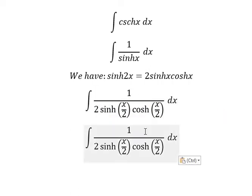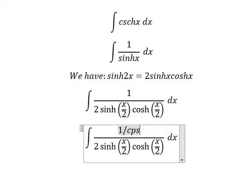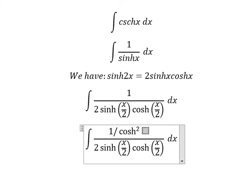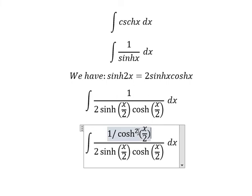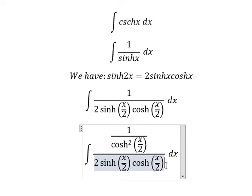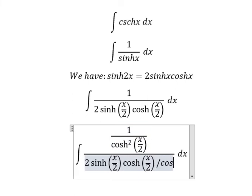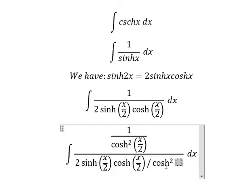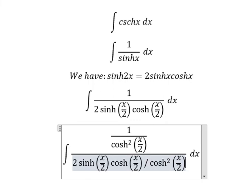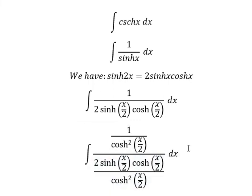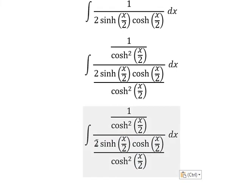Next, I will multiply by cosine x over 2 squared on numerator and denominator. We simplify this one.